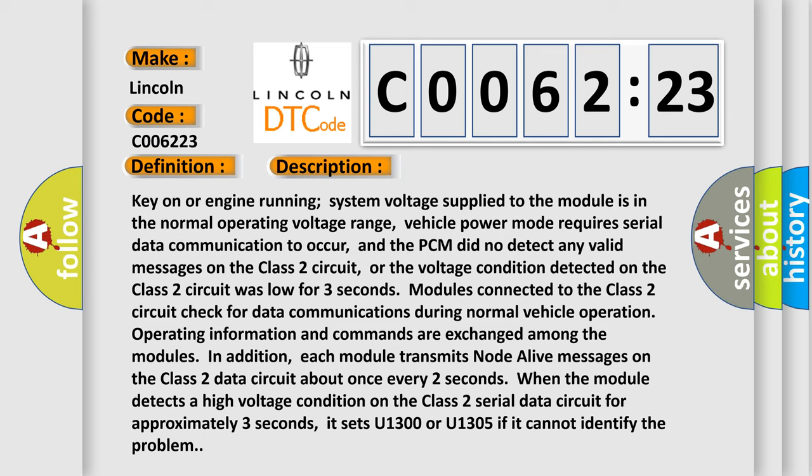When the module detects a high voltage condition on the Class 2 serial data circuit for approximately three seconds, it sets U1300 or U1305 if it cannot identify the problem.